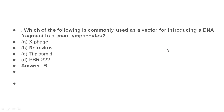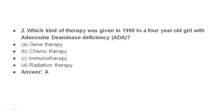The genetic material of a retrovirus is RNA. Next question: in 1990, there was a four-year-old girl with adenosine deaminase deficiency. The treatment for her was not chemotherapy or radiation therapy — she had no cancer. She had a gene deficiency. This was the first time in 1990 that adenosine deaminase deficiency was treated with gene therapy.